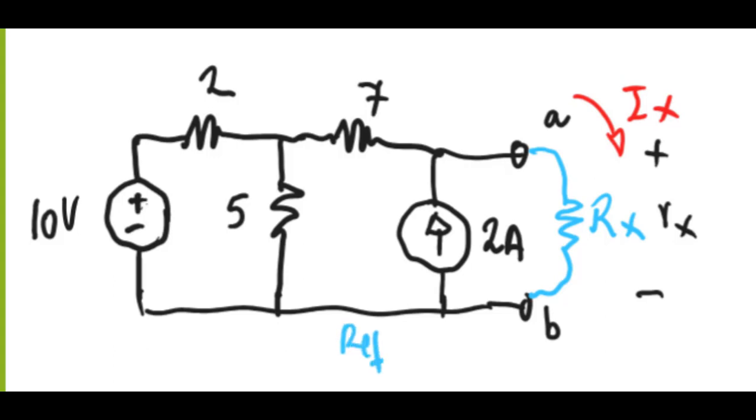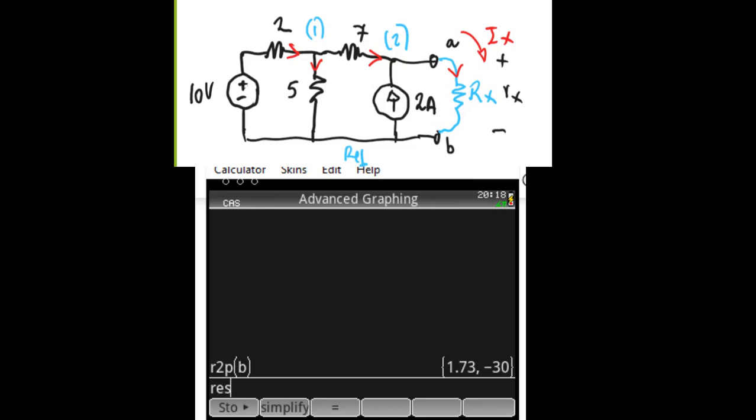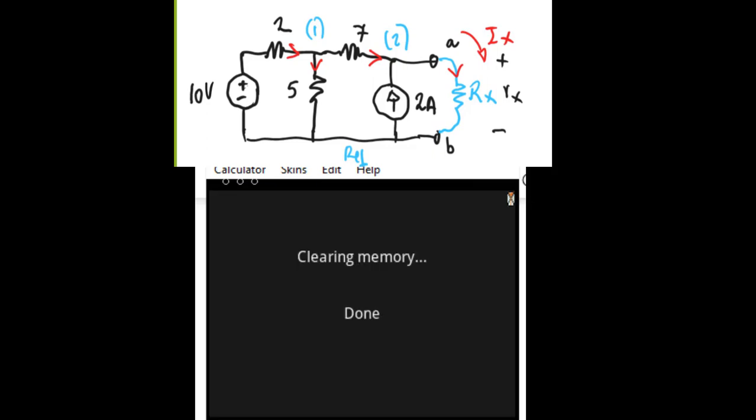Reference node. So nodes 1 and 2. Identify branch currents. Any direction is fine. Those are the directions for the branch currents. And we start writing equations. Restore 2023F. Remember what that is.